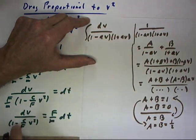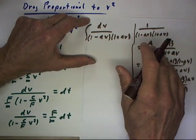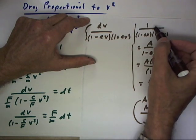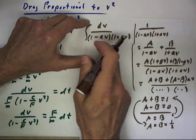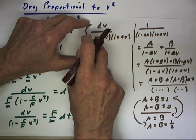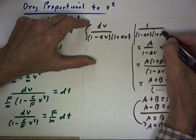We'll correlate this back with c over f v squared in a minute. But the expression we need to use partial fractions on is simply the coefficient of dv in this integral, and that's 1 over 1 minus av times 1 plus av.